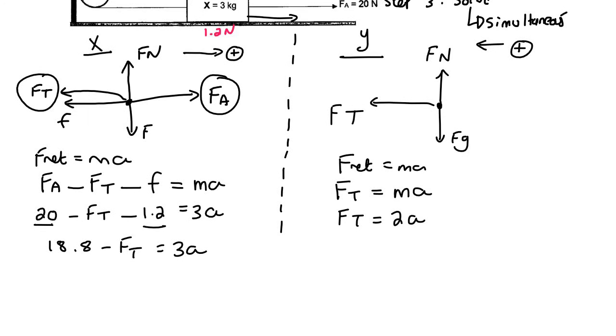What we now need to do is just link this all together simultaneously. I'm going to get FT by itself over here, so that would be FT equals 18.8 minus 3a, and then I'm going to make these two equations equal to each other. So that's going to give us 18.8 minus 3a equals to 2a.